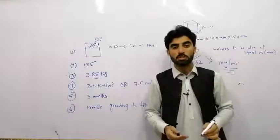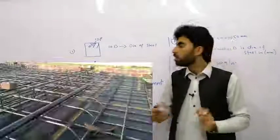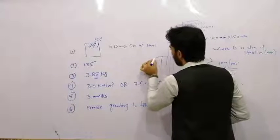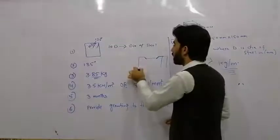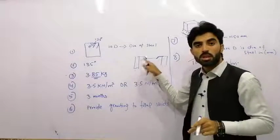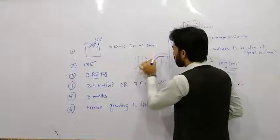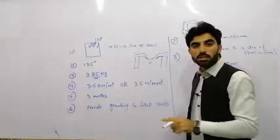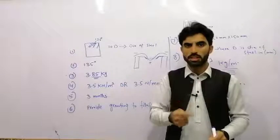The ninth question is: why are steel bars bent near the support in a slab? We bend steel bars near the support in a slab to resist the negative bending moment, also called hogging. At the support the bending moment is negative, while at mid-span it is positive. This question is very important and is frequently asked in interviews.